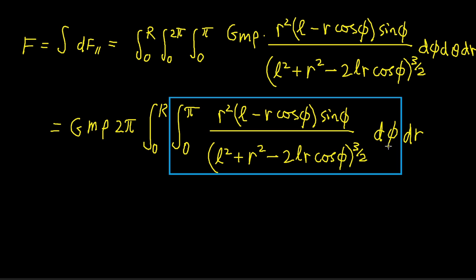The inner integral, i.e. the integral with respect to φ, can be solved by a u substitution. This is because we notice that there is a cos φ, and the factor sin φ times dφ.